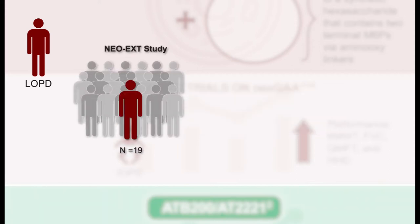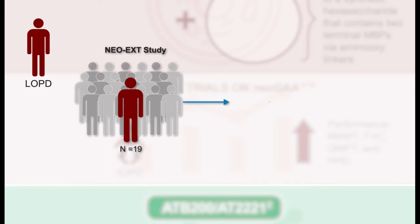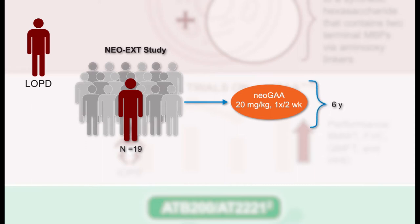An extension study was continued after the initial phase 1/2, and 19 of the 24 patients entered it. All were switched to 20 mg/kg of avalglucosidase alfa once every two weeks. Participants will continue to receive the investigational product for a planned follow-up of six years. Thus far, there has been no evidence of inhibition of enzyme activity in patients dosed over three and a half years.